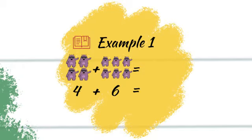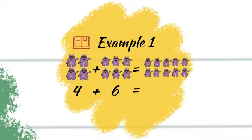So if we have 4 and we add 6, how many monsters do you think we'll end up with? Let's see. 1, 2, 3, 4, 5, 6, 7, 8, 9, 10. 10 monsters. So when you add 4 and 6, you end up with 10.